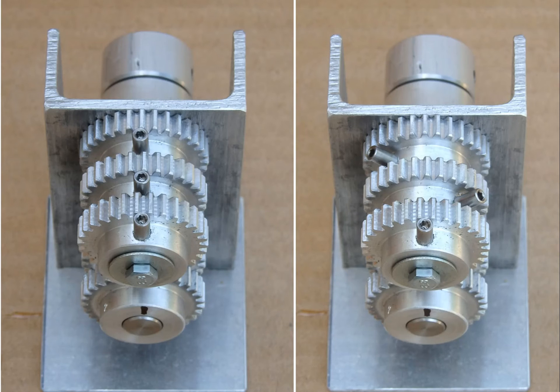The third gear pair uses also 30 teeth for the driving gear but now 31 for the driven and so this gear is moving slower than the first driven one.